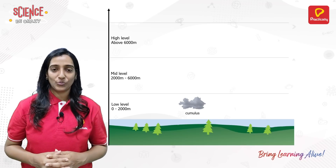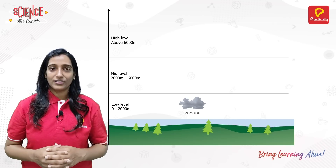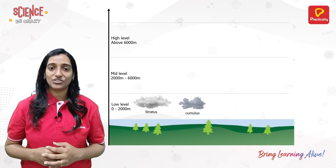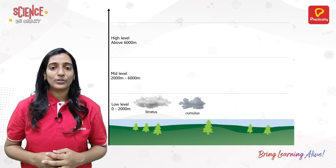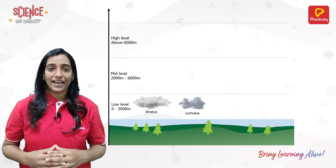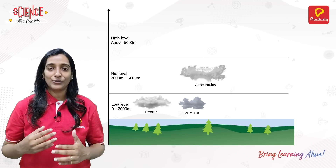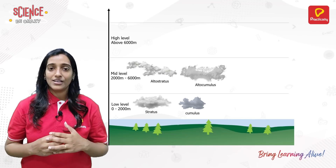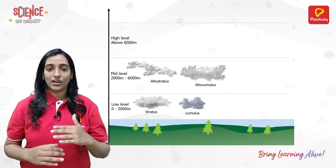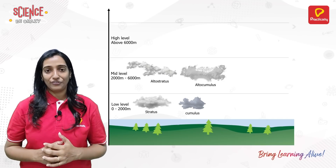Let's see some common cloud types you can see in the sky. The first one is Cumulus — a very common, pretty cloud. Then there is Stratus, which is similar to Cumulus but is a spread-out cloud. Then they have their bigger brothers: Alto Cumulus and Alto Stratus. These clouds are situated in the range of 2000 to 6000 meters away from the surface of earth.